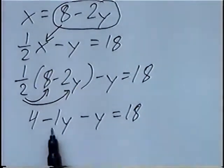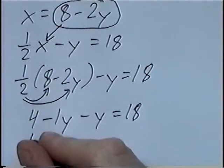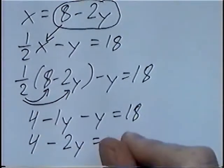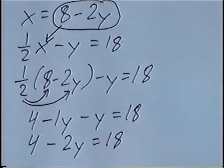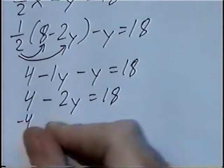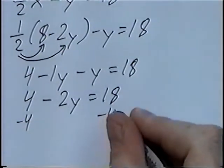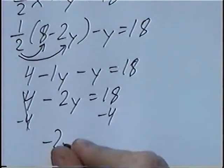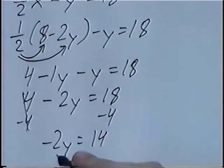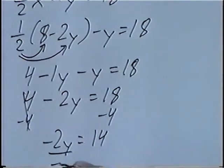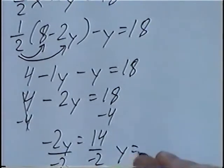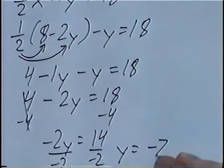Combining like terms, negative 1y minus y would be negative 2y. And subtracting 4 on both sides, negative 2y equals 14. Dividing, we get our first answer: y equals negative 7.